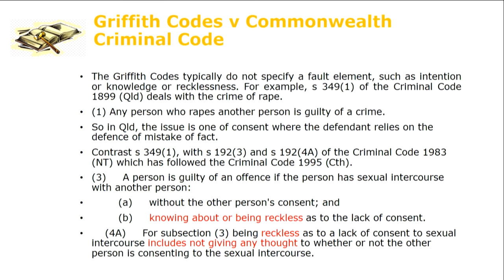Contrast the Queensland offence of rape with that of the Northern Territory. The Northern Territory has chosen to follow the Commonwealth Criminal Code's architecture and specifies a fault element for every crime. In the Northern Territory Criminal Code for the offence of rape, you see the phrase 'without the other person's consent and knowing about or being reckless as to the lack of consent.' Subsection 4A defines reckless as including not giving any thought as to whether or not the other person is consenting. So if the defendant's defence is 'I never thought to ask,' you can see there's a very different likely outcome in the Northern Territory compared to Queensland, where there is no fault element specified.